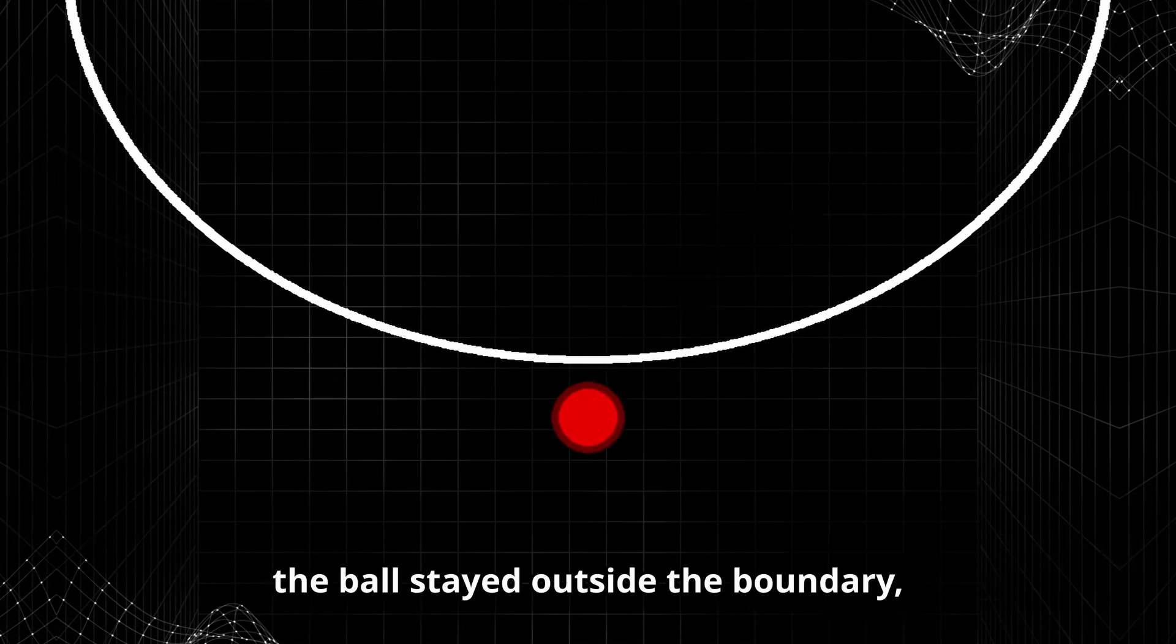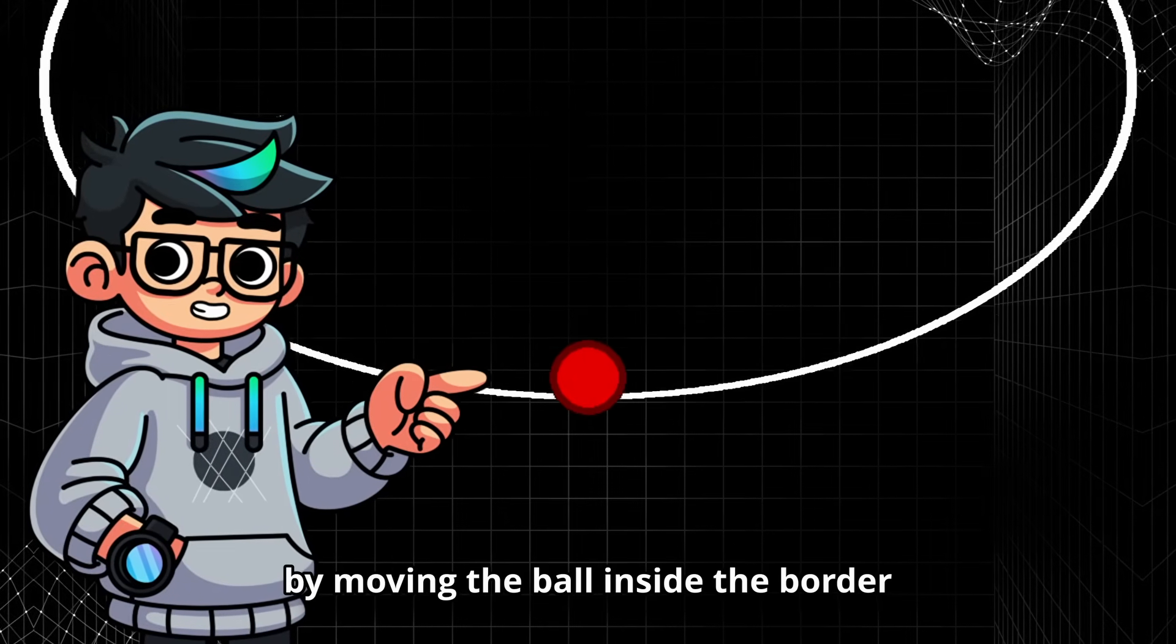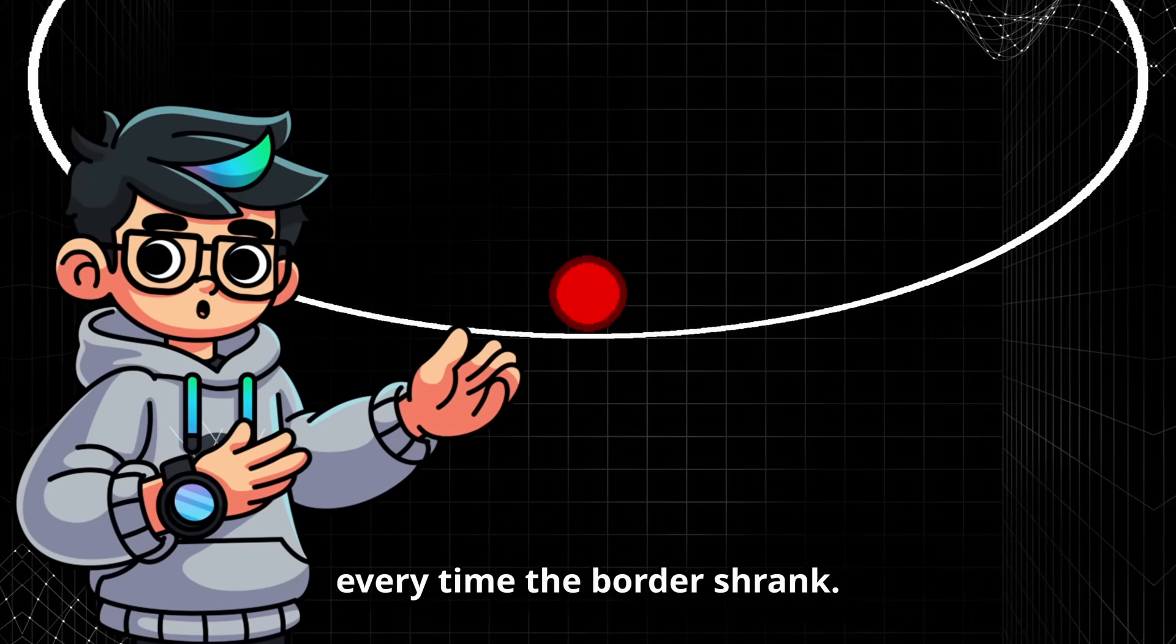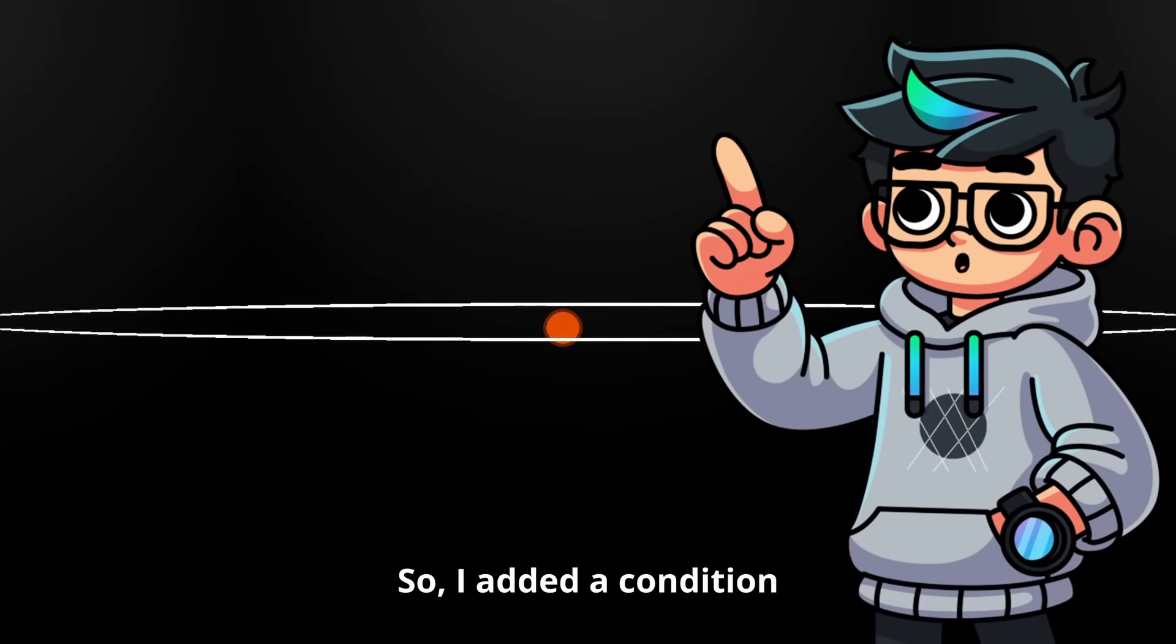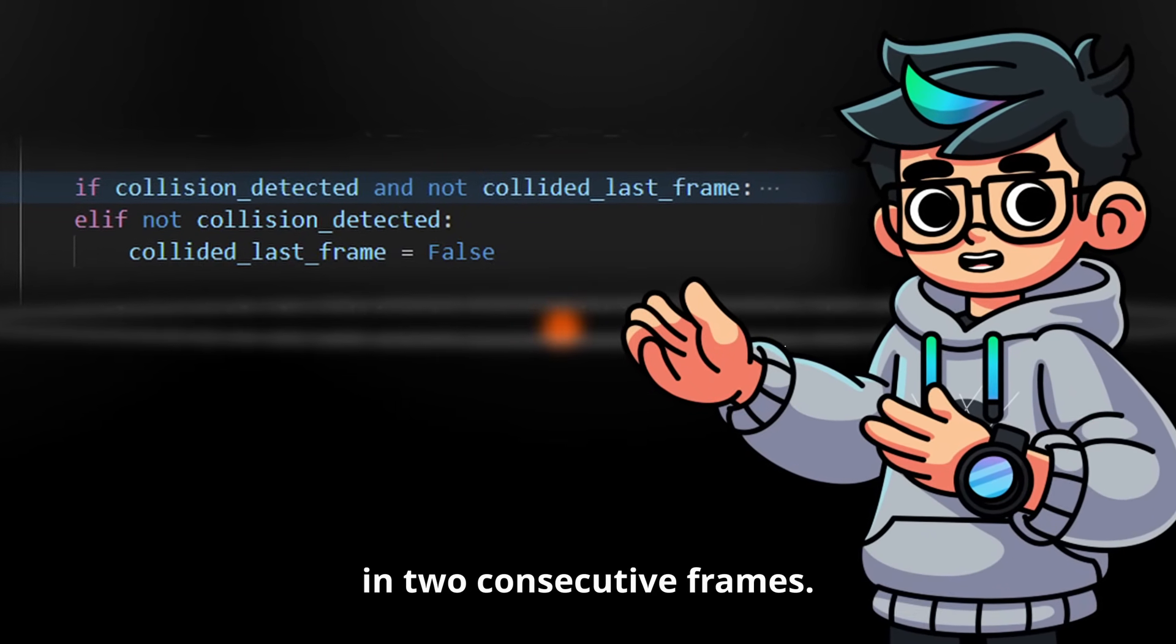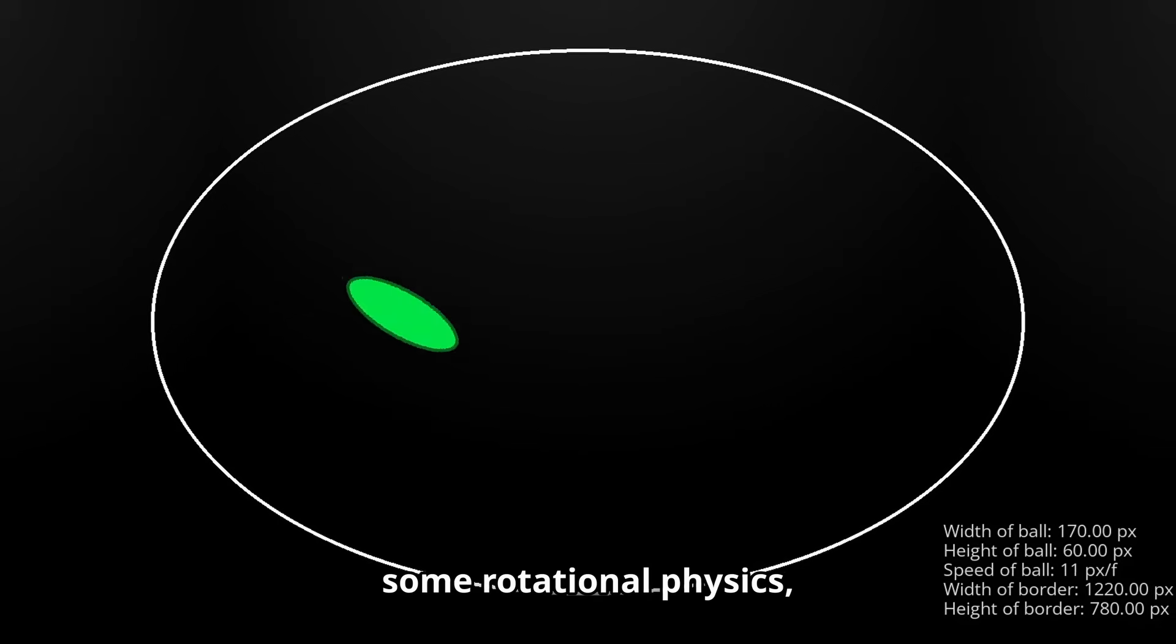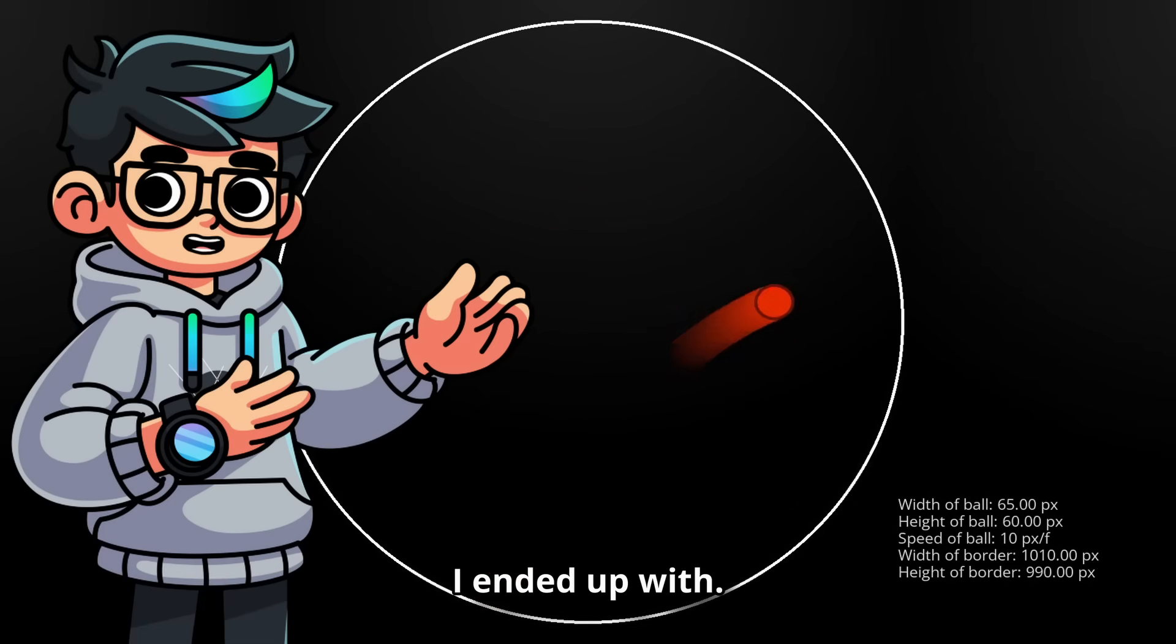The first bug appeared because when the border shrank, the ball stayed outside the boundary, causing it to shrink rapidly. I tried to fix this by moving the ball inside the border every time the border shrank. This helped, but it didn't fully fix the bug. So I added a condition that ensures the border cannot shrink in two consecutive frames. I also tried to implement some rotational physics, but this didn't work out very well. So here's the simulation I ended up with.